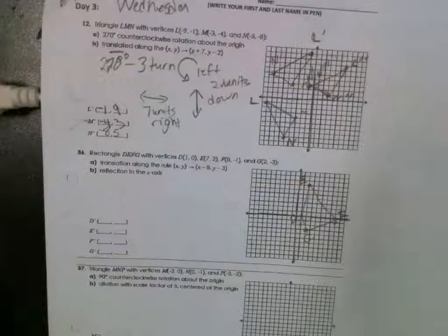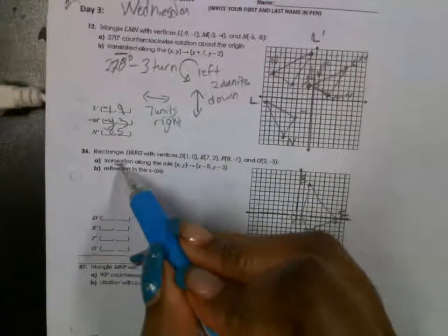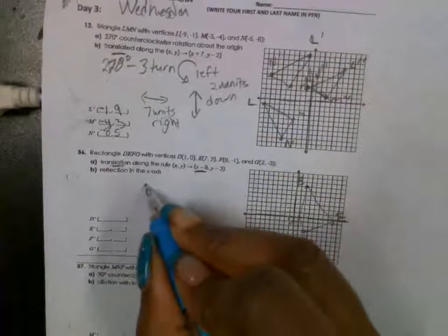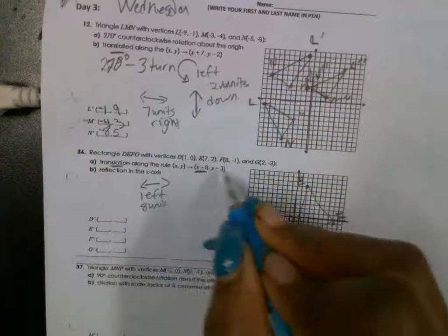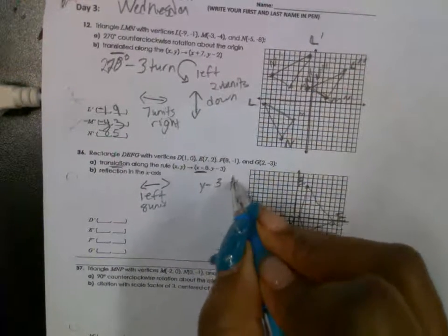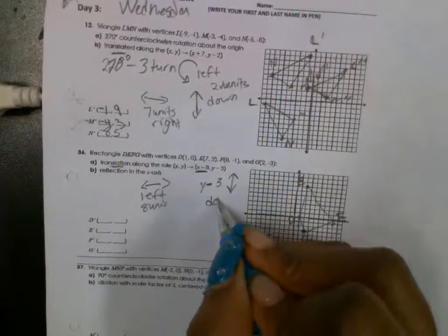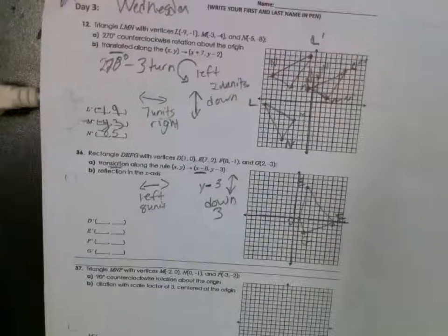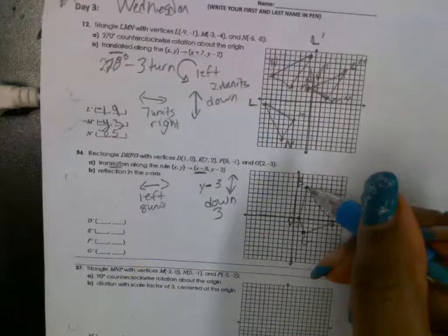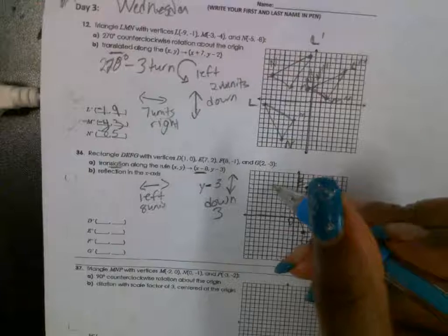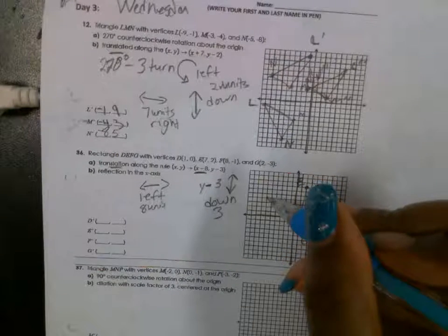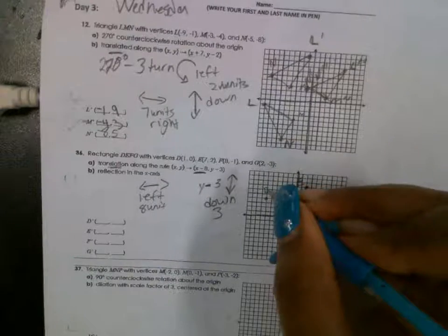Now you're going to translate — so slide each of these points. It says X minus 8. Remember, X is left to right. If it's minus, you're going to the left — so this is left 8 units. Y minus 3 — that's up/down, minus is down. So you're going down 3. So to the left 8 units, and 3 units down. E prime: left 1, 2, 3, 4, 5, 6, 7, 8, then down 1, 2, 3. This is E prime.